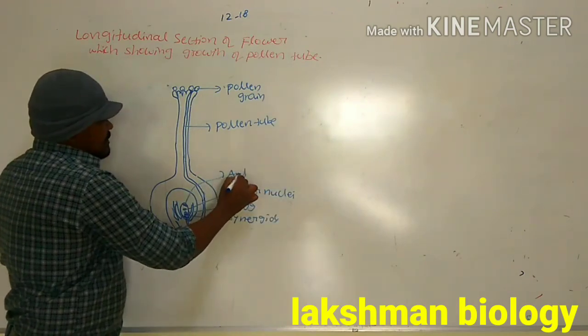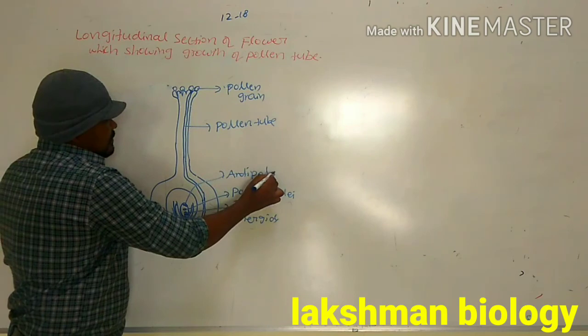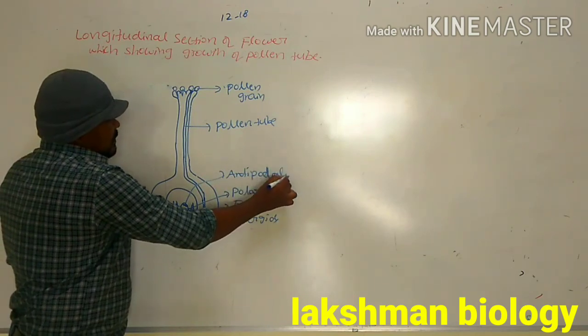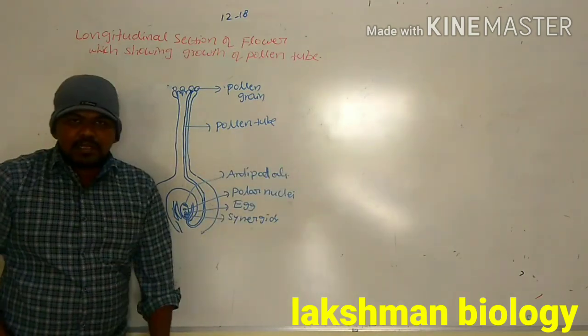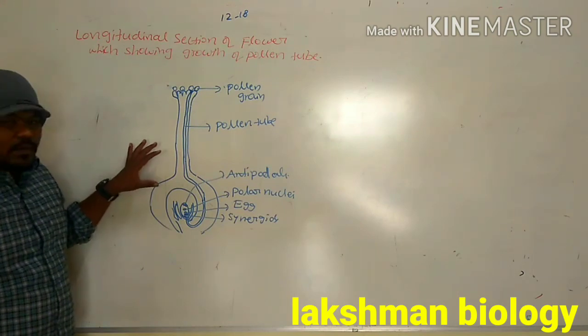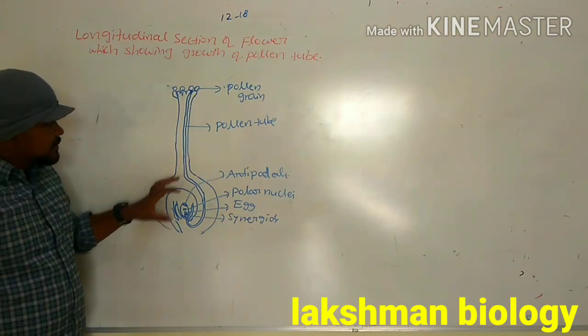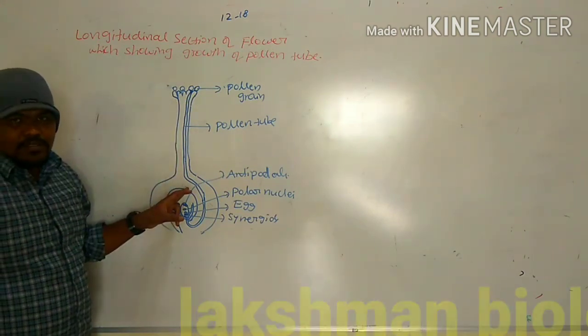These are the antipodals. That is about how to draw the sectional view of the flower which will show the growth of pollen tube.